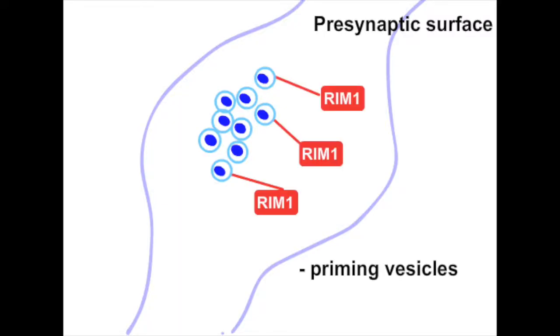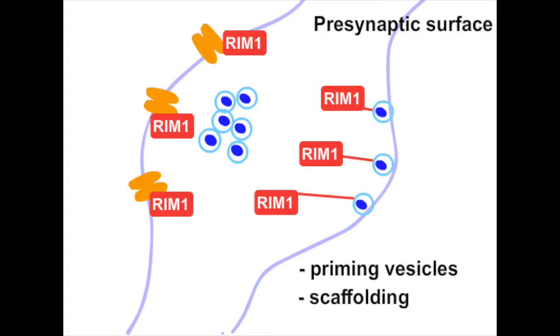RIM1 is a presynaptic protein involved in controlling and anchoring the neurotransmitter release machinery. We genetically deleted RIM1 to see if presynaptic NMDA receptors needed RIM1 to signal.